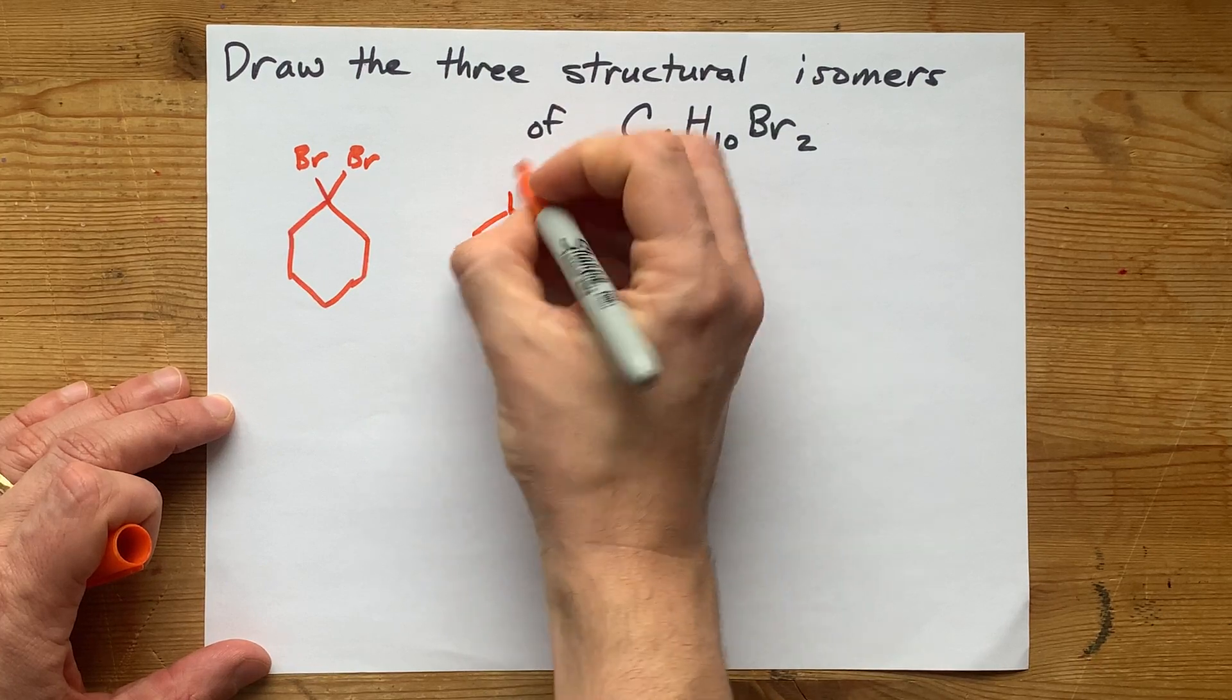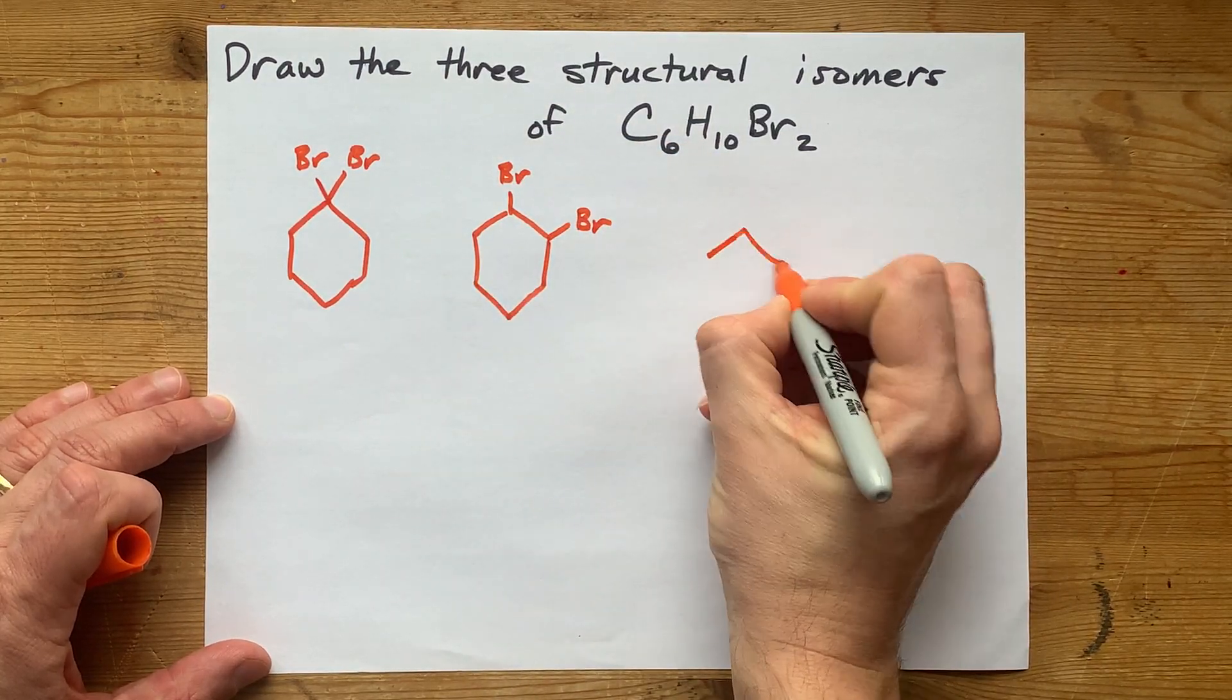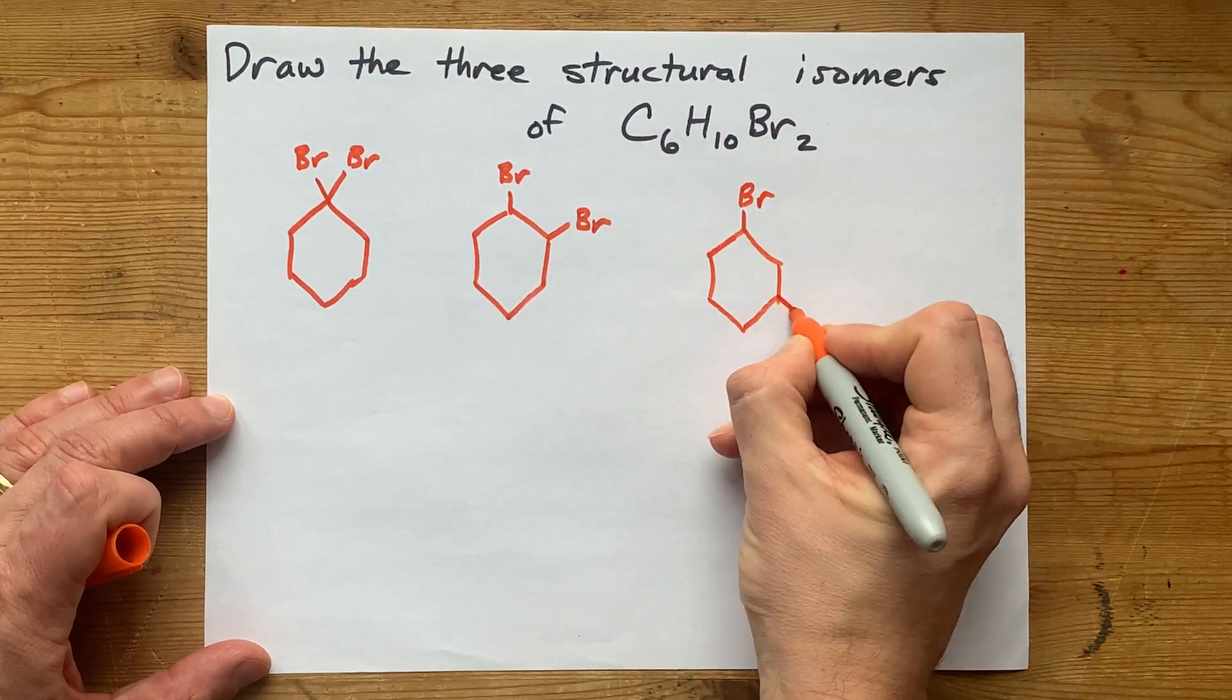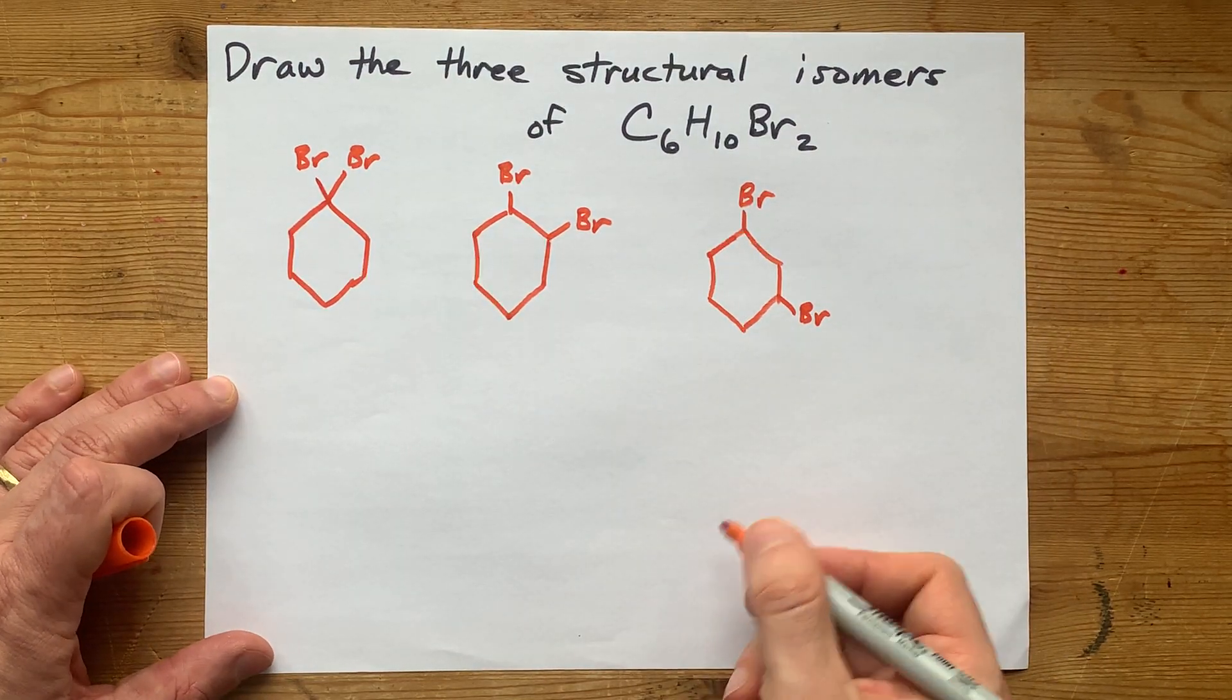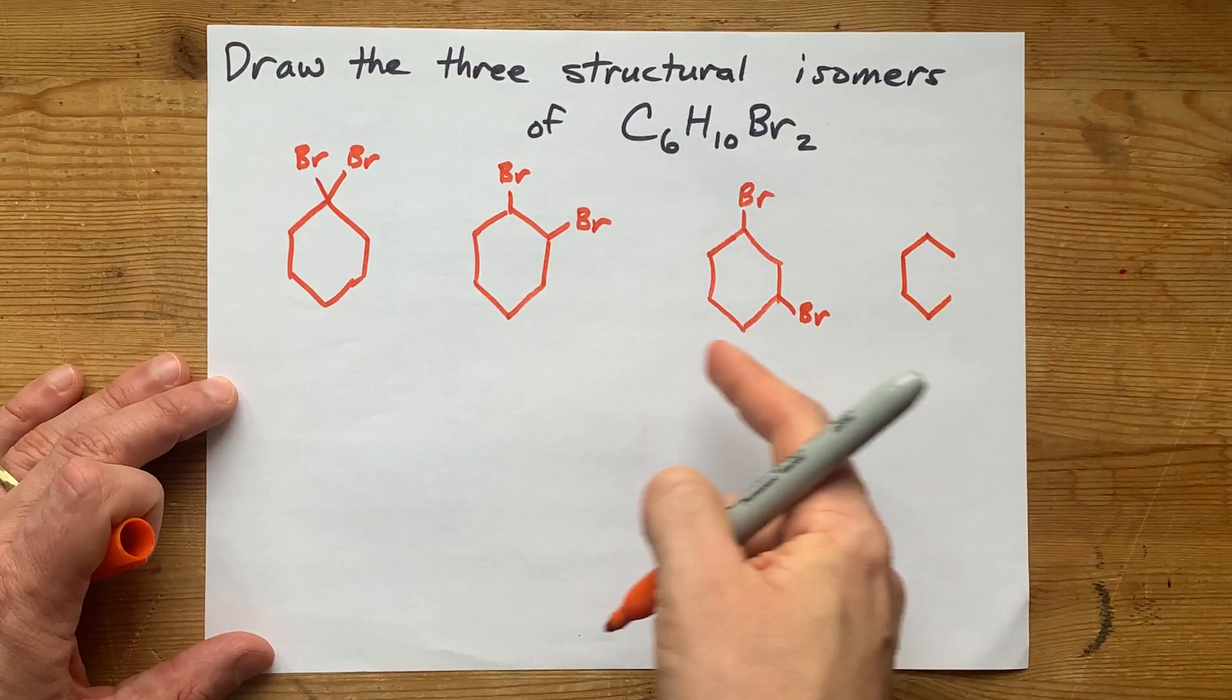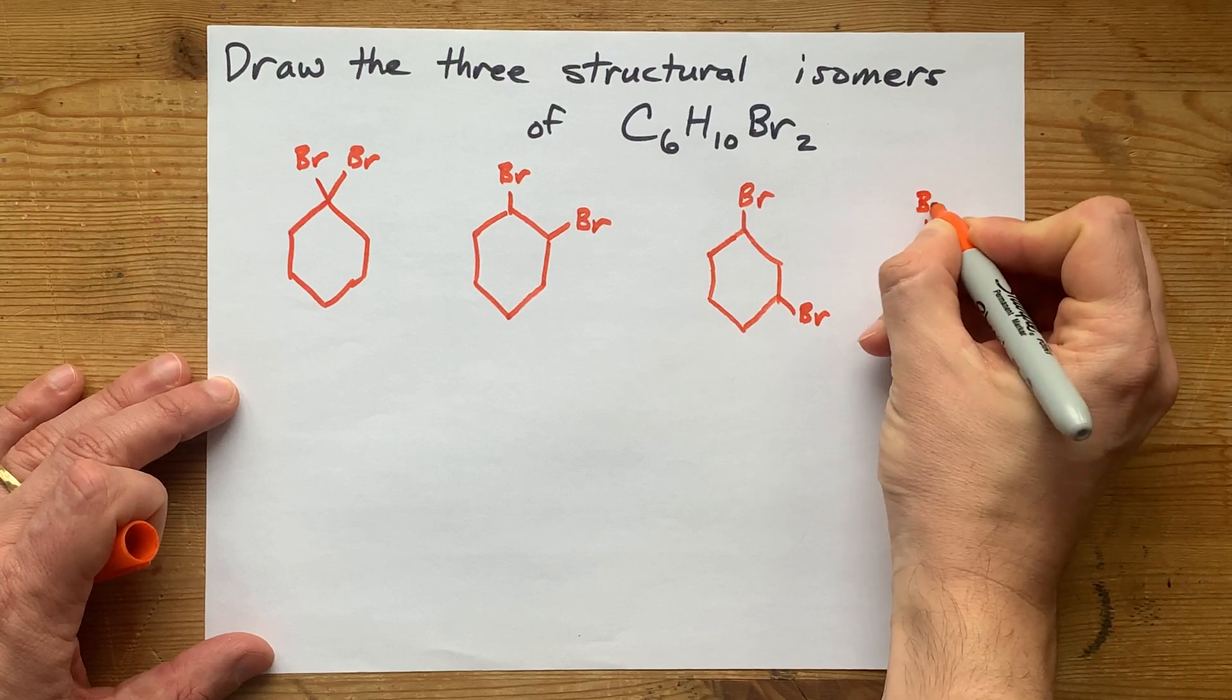Another option is for the bromines to be on adjacent carbons. Another option is for the bromines to be on, like, carbons one and three, if you started to count around the ring. If you're into benzene, which this is not, then that would be like ortho-meta, and this would be called para. But you can't do that here.